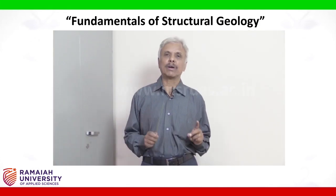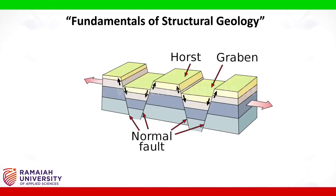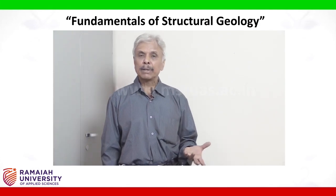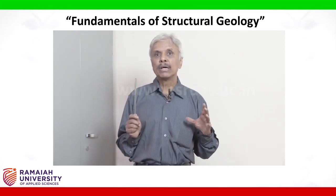Associated with normal faults are another unique type of features called horst and graben. Horsts are the faulted blocks that have been moved up with reference to the normal fault on either side. The graben, on the other hand, is a block representing the downward movement with reference to the normal fault on either side — a depression. The classic example is the Narmada-Tapti lineament in India, which is a classic example of the graben type of faulting.